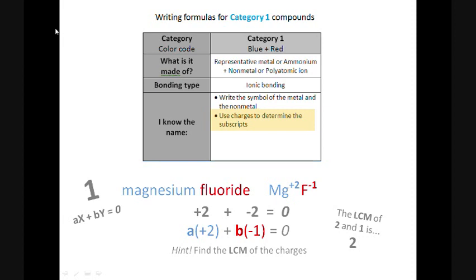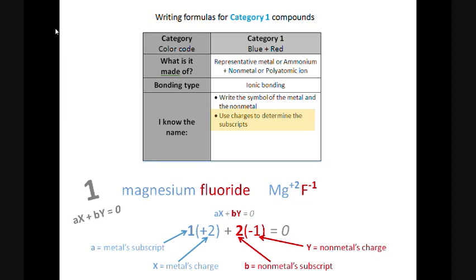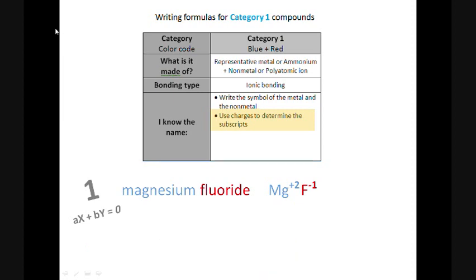What number times 2 gives us 2? Oh, it has to be 1. So a must equal 1. What number times 1 will give us 2? It has to be 2. So b must equal 2. So there it is. Using the ax plus by equation, we determine that the subscript for the metal, that's what a stands for, needs to be 1. And the subscript for the non-metal, that's what b stands for, needs to be 2. So we add those subscripts to our symbols. We get Mg1 and then F2. But since we don't actually write the ones in chemical formulas, our final formula is MgF2. So that's the ax plus by method. It may seem complicated, but I guarantee you it always works.